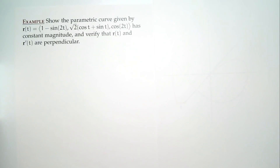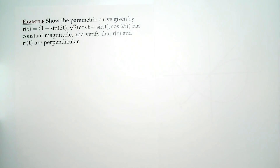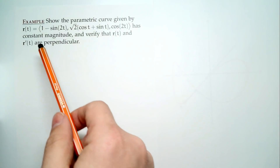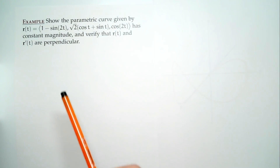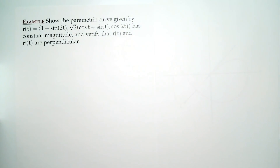I said velocity — that's getting ahead of where we're going today — but the derivative, the change, that's the theory. Let's see it in practice. So I have this particular curve: R(t) = (1 - sin(2t), √2·(cos t + sin t), cos(2t)). The claim is this has constant magnitude. We'll verify that, and then verify that R and R' are perpendicular.